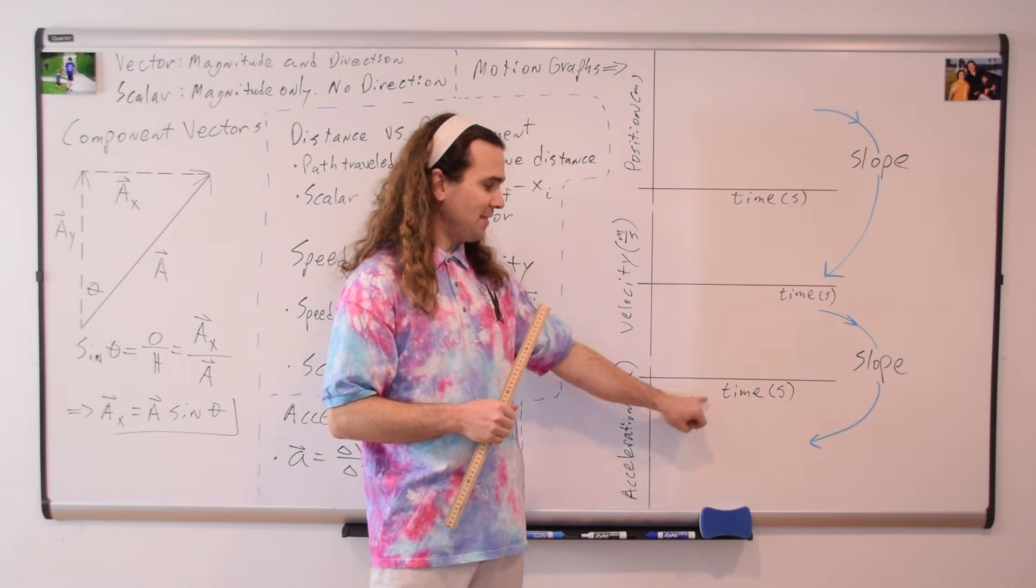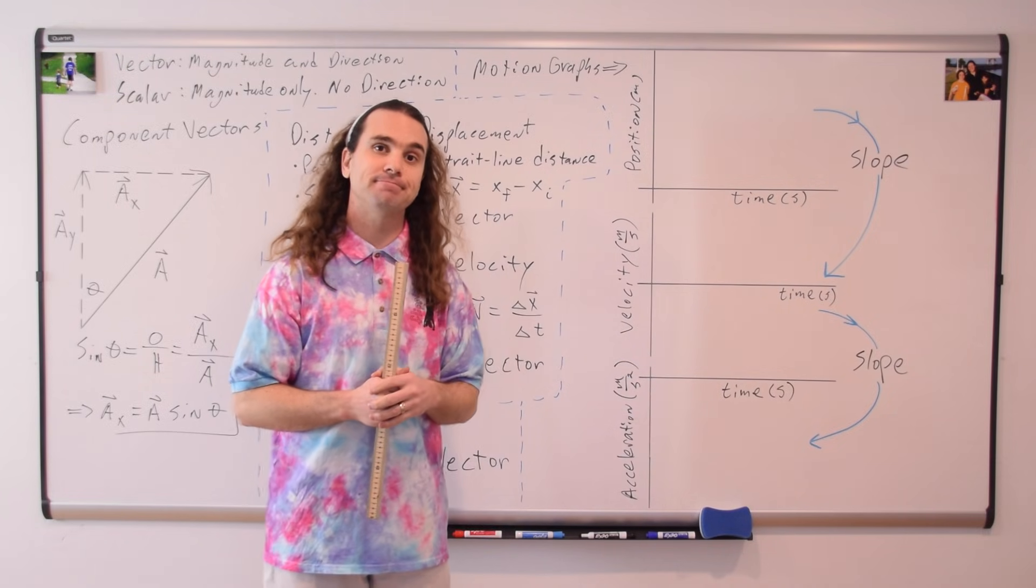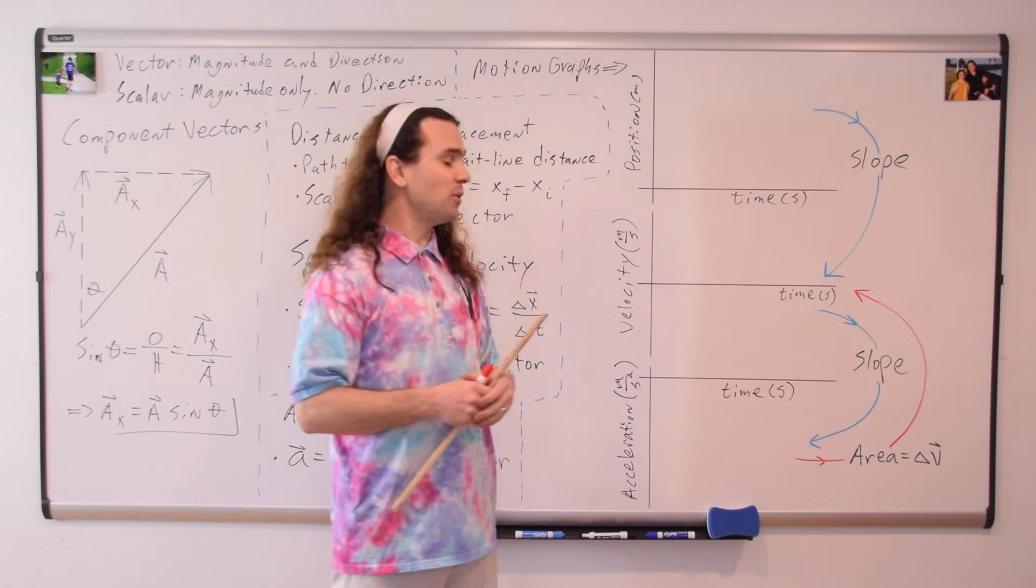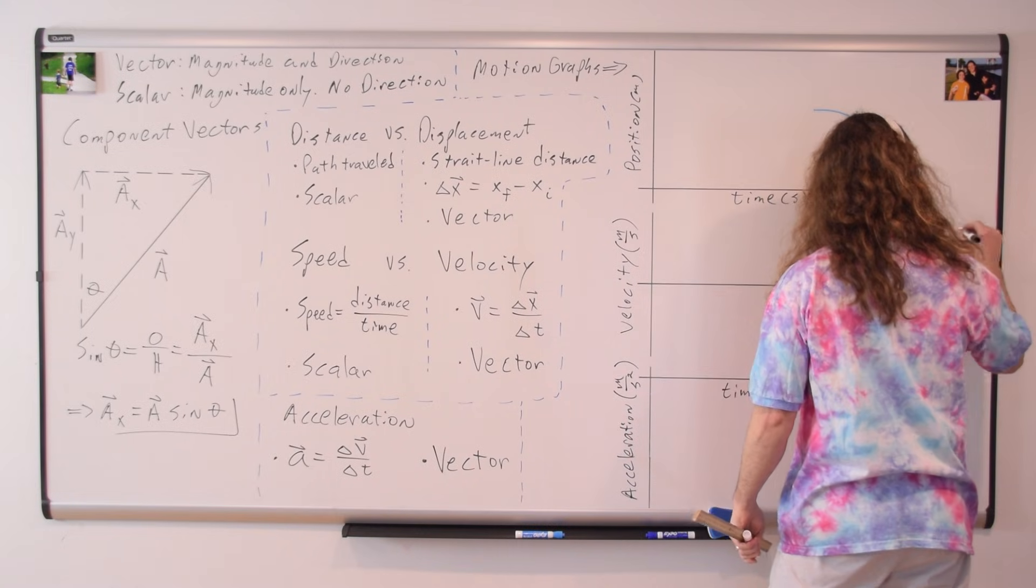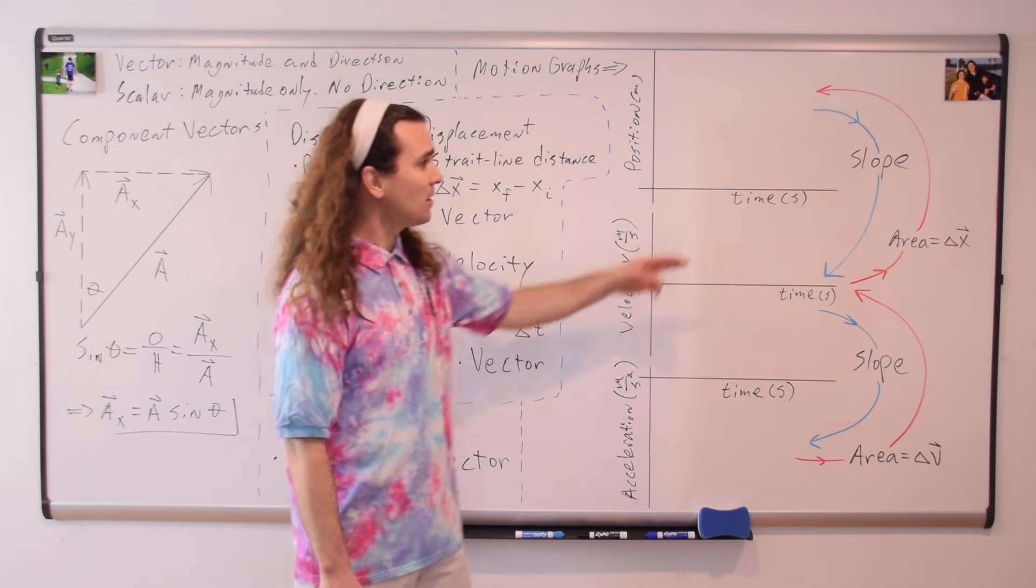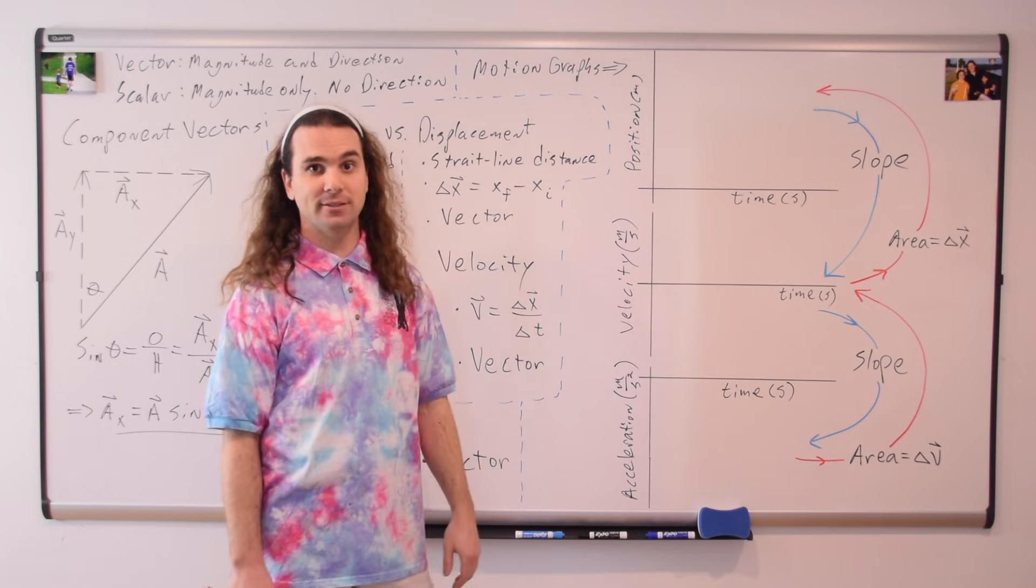What is the area between the curve and the time axis for an acceleration as a function of time graph? Velocity. No, it's change in velocity. Change in velocity. And what is the area between the curve and the time axis for a velocity versus time graph? Change in position. Which is displacement. Which is why I arrange the graphs in this order, because they are related by the slope and the area between the curve and the time axis.